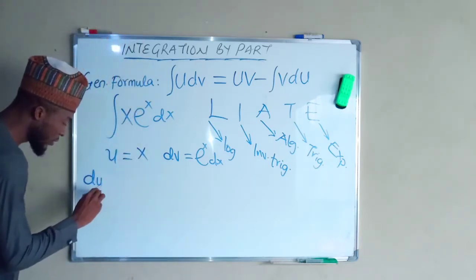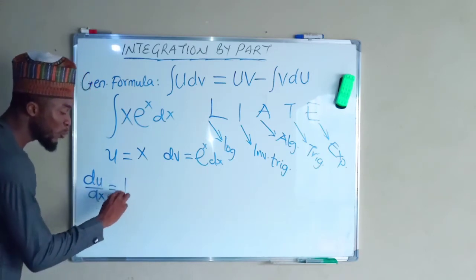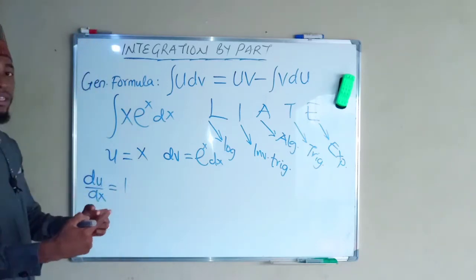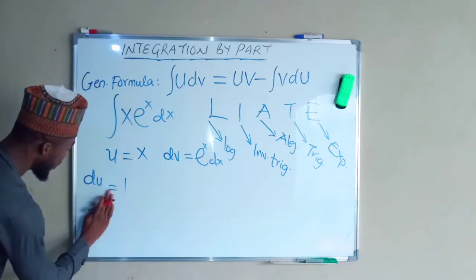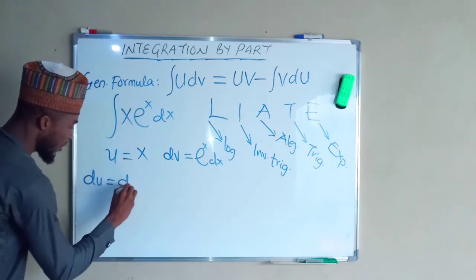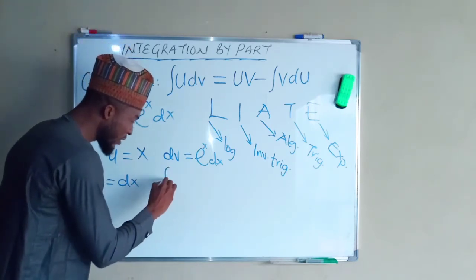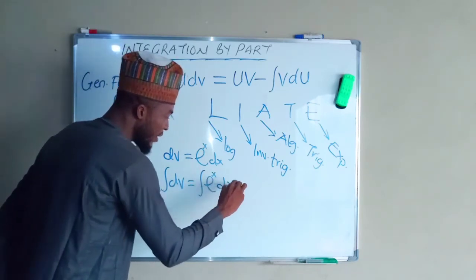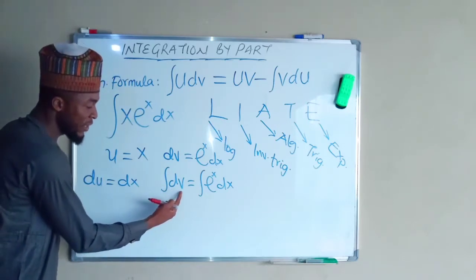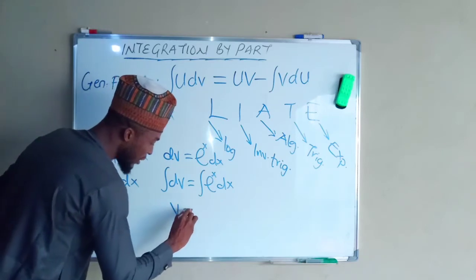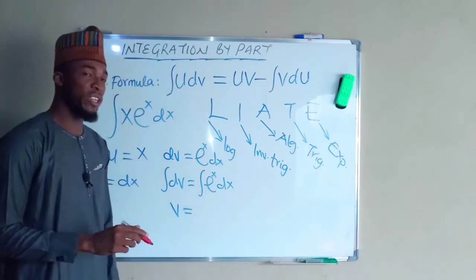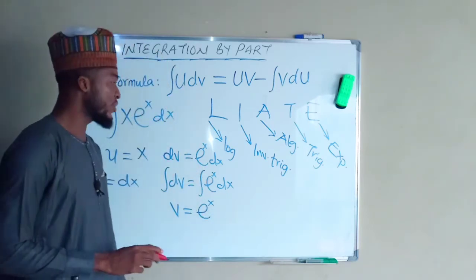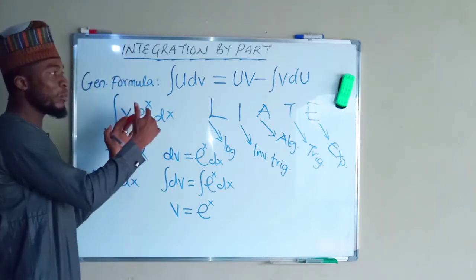So du/dx equals 1, because differentiating x gives 1. Multiplying both sides by dx, we obtain du equals dx. Now we take the integral of dv, which equals the integral of eˣ·dx. The integral of dv gives us v, and the integral of eˣ is eˣ — we don't write plus c yet because we are not done with our integration. Now let us substitute everything back into the main formula.